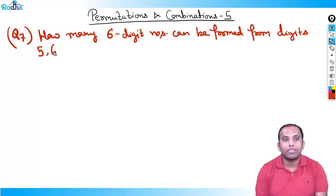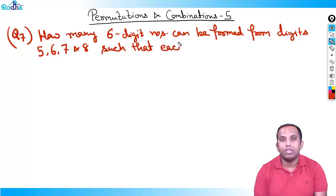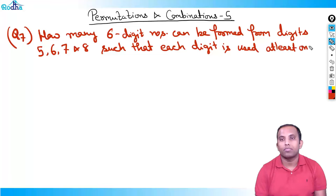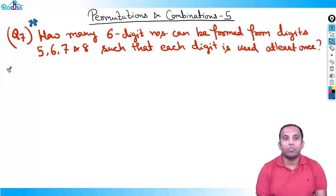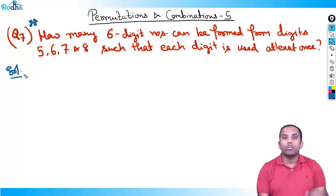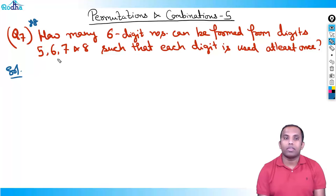Each digit is used at least once. This is a very important question with a very important concept. If you want, you can pause this video for five minutes and try this question. Let's solve it: how many six-digit numbers can be formed from digits five, six, seven, eight such that each digit is used at least once? We'll make six places: one, two, three, four, five, six.